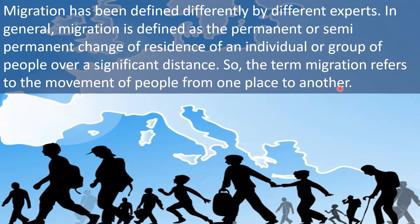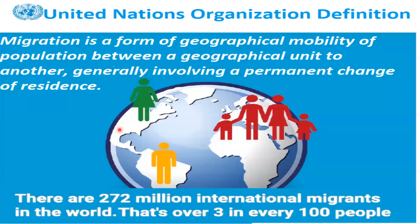Migration has been defined differently by different experts. In general, migration is defined as the permanent or semi-permanent change of residence of an individual or group of people over a significant distance. So the term migration refers to the movement of people from one place to another. For example, shifting your house from one area to another area within the same town limit is not migration. Instead, you are moving away from a particular place of living to another area — country to the nearby town, city, next state, or next country. That is called migration.